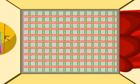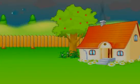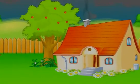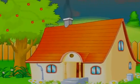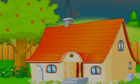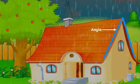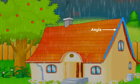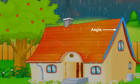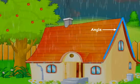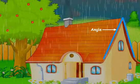Now have a look at this house. These types of houses have slant roofs — that is, the roofs are inclined at an angle with each other to prevent water from getting stagnant and piling of snow.